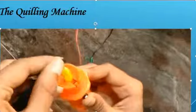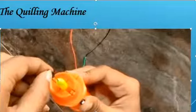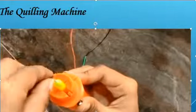And now I'm pressing the push button. The push button will operate the DC motor, and the quilling will start.